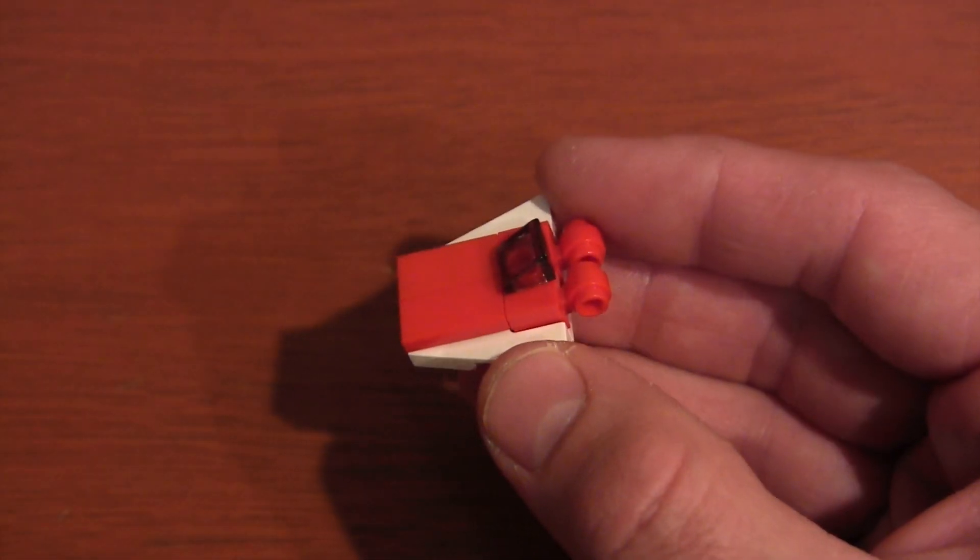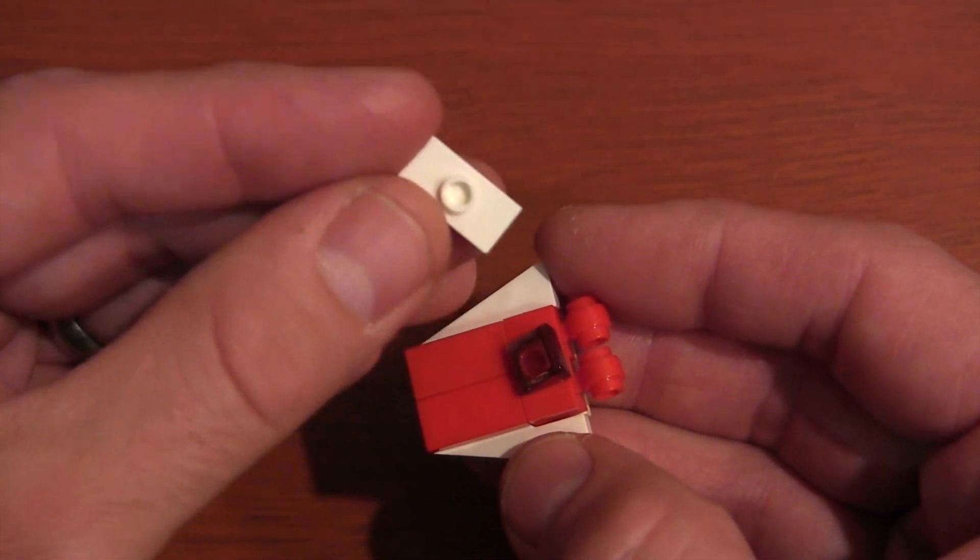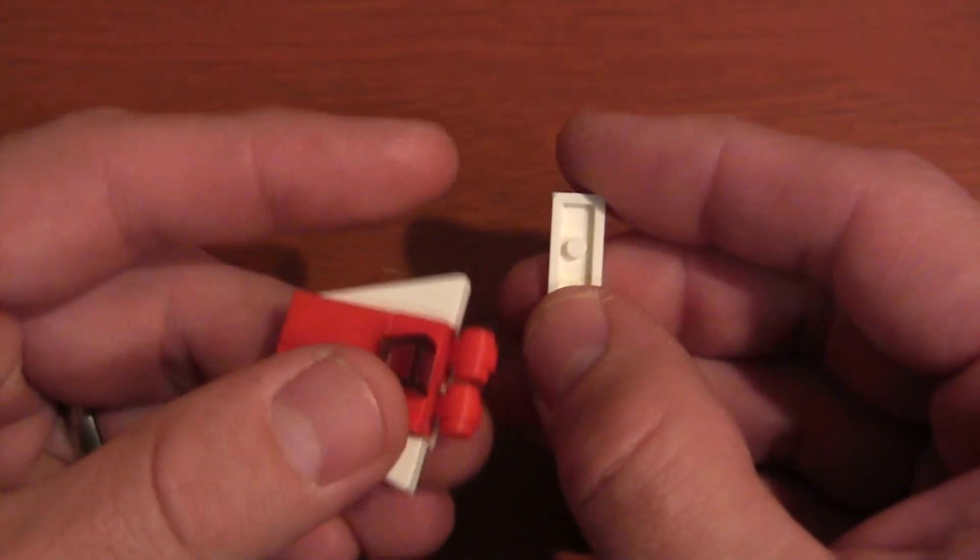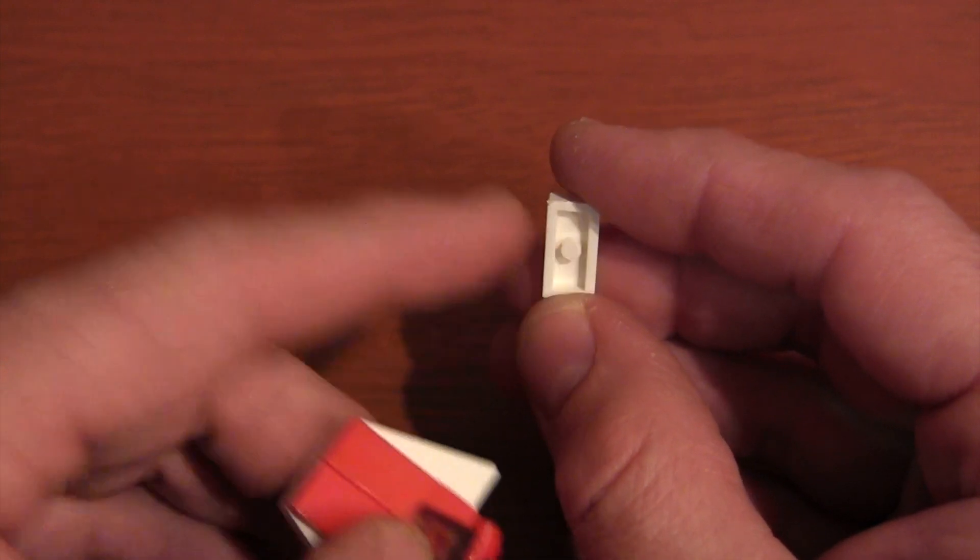And last, we're going to get these 1x2 jumper plates and put them on as our back fins or wings. And the reason you have to use a jumper plate is because they've got that nice little notch underneath.